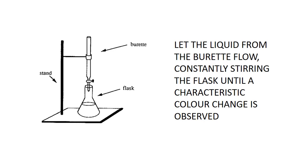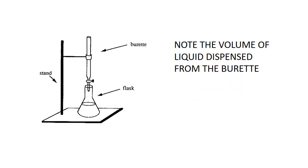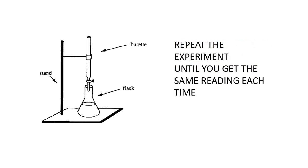Let the liquid flow from the burette with constant stirring of the flask until the characteristic color change is observed. Note the volume of the liquid dispensed from the burette and repeat the experiment until you get the same reading each time.